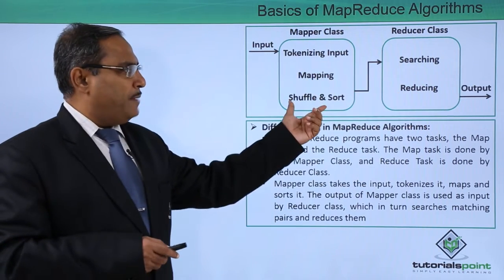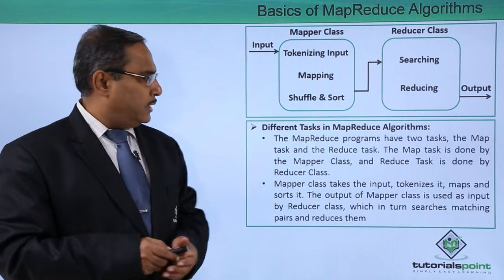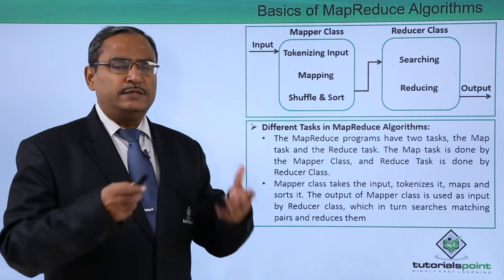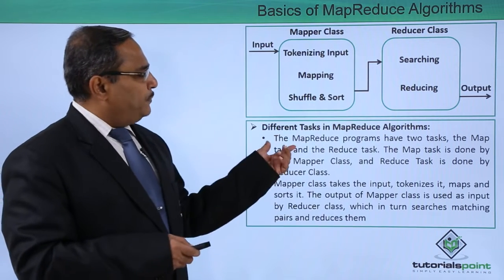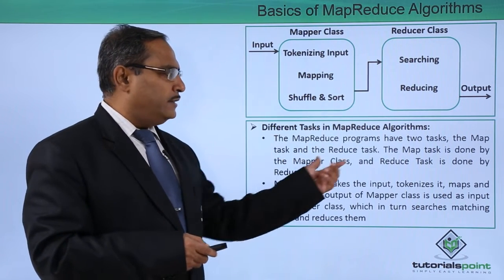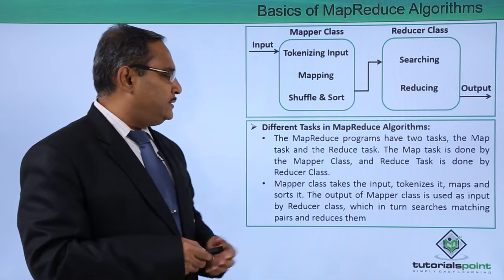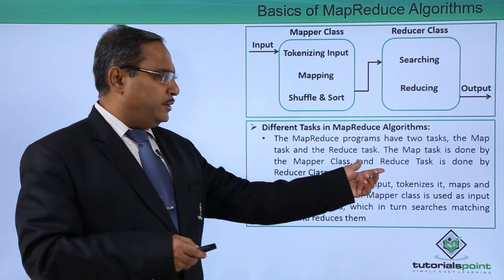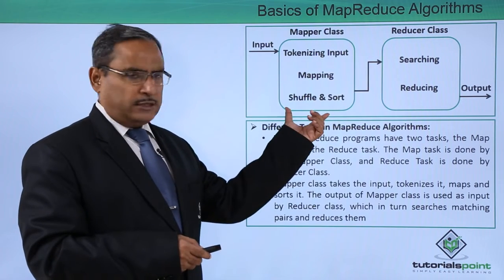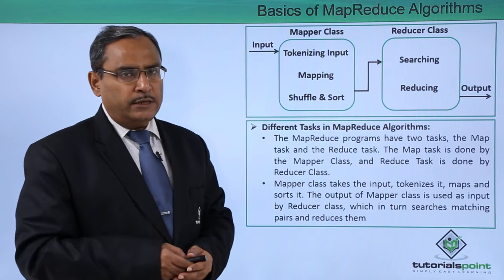These are the main operations in the mapper class, and these are the two operations done in the reducer class. MapReduce programs have two tasks: the map task and the reduce task. The map task is done by the mapper class and the reduce task is done by the reducer class.